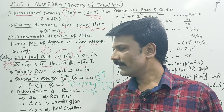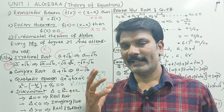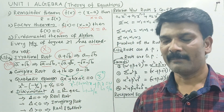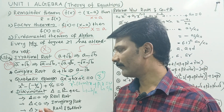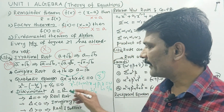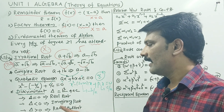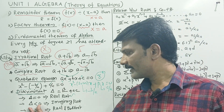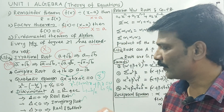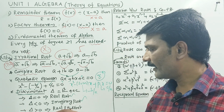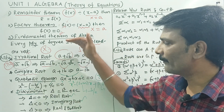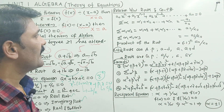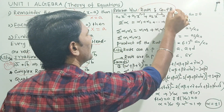In a quadratic equation, the nature of roots: if delta is greater than 0, the roots are real and distinct. This is one primary relation between roots and coefficients.